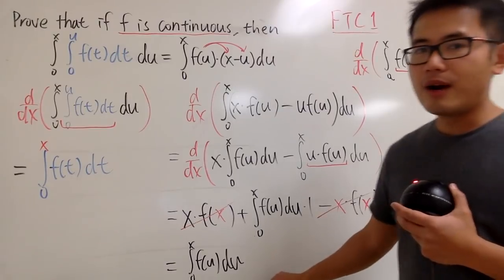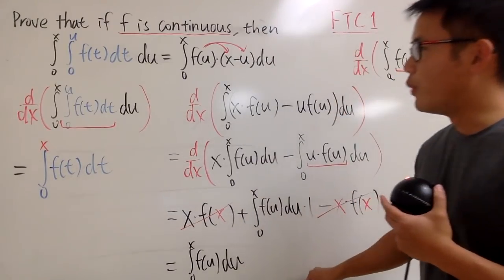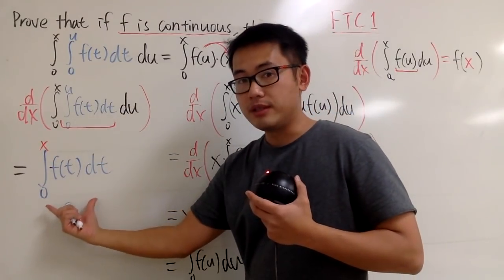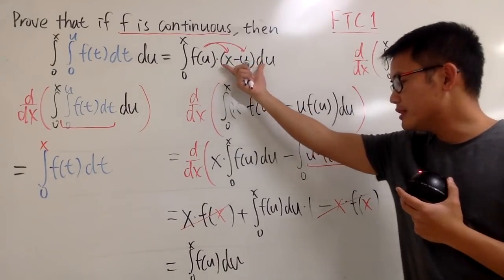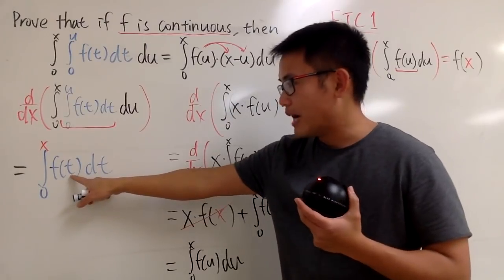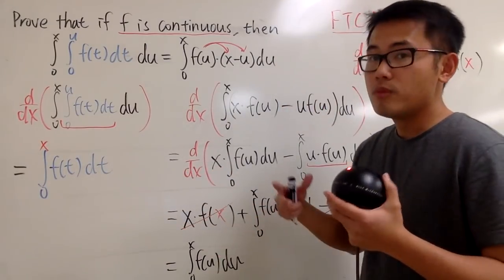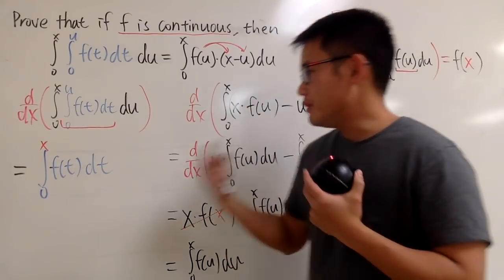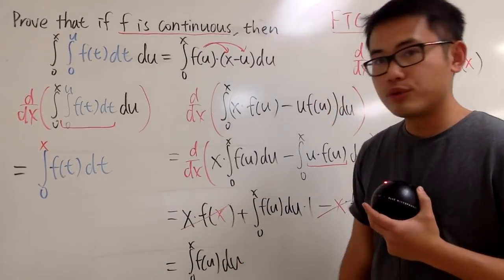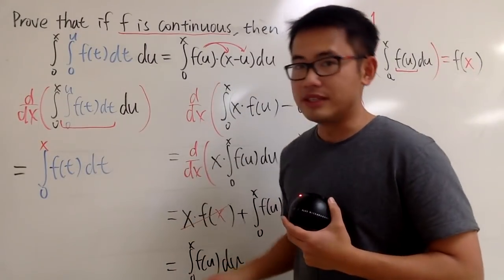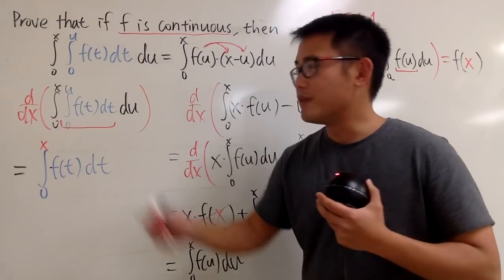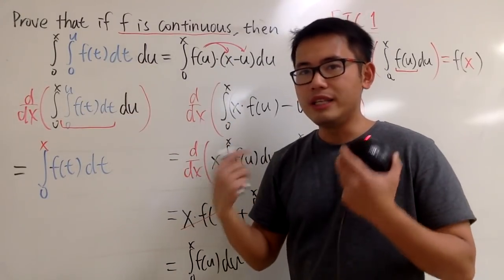So in the end, the derivative of the right-hand side is just the integral from 0 to x of f of u du. So far so good. Now, what is the connection? On the left-hand side, when we differentiate, we get the integral from 0 to x of f of t dt. On the right-hand side, when we differentiate, we get the integral from 0 to x of f of u du. The integrand is just f, and t and u are just dummy variables — if you think about the area from 0 to x, you actually get the same area. The derivative of the left-hand side and the right-hand side are equal.